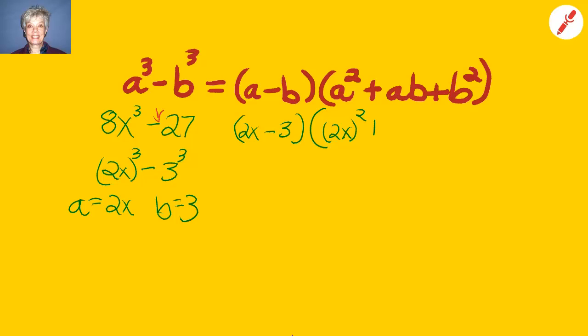So we'll have 2x minus 3 times 2x squared plus 2x times 3 plus 3 squared. So we'll have 2x minus 3 times 4x squared plus 6x plus 9. There you have it. You've factored by the difference of two cubes.